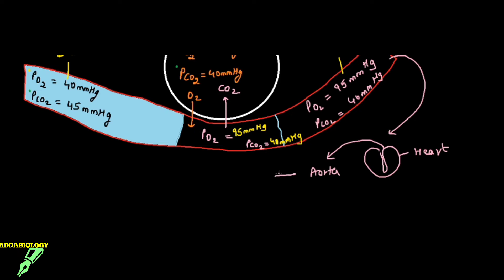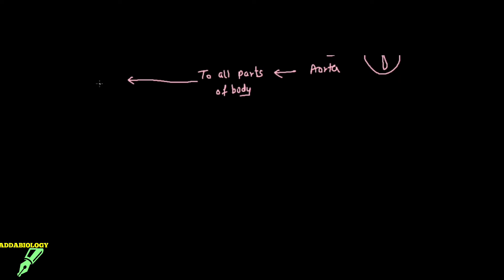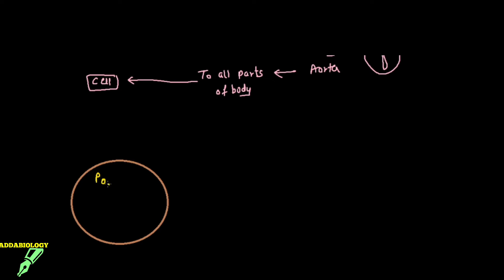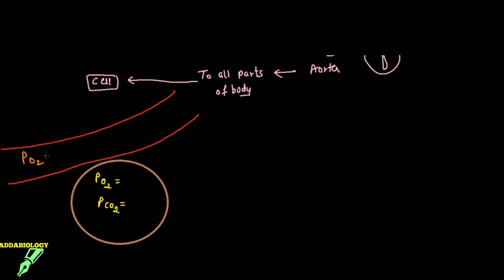From the heart, the oxygenated blood will be pumped to all parts of the body and will travel into the cell, or even the tissue. For that, we need to understand one cell — you can assume it as a cell or even as a tissue. In the cell, there will be high carbon dioxide concentration and low oxygen concentration. So the partial pressure of oxygen in the cell will be definitely less than in the oxygenated blood. The partial pressure of oxygen in oxygenated blood is 95 mmHg and of carbon dioxide it is 40 mmHg. So the carbon dioxide from the cell or tissue will go into the oxygenated blood, making it deoxygenated, and from the oxygenated blood, oxygen will enter into the cell.